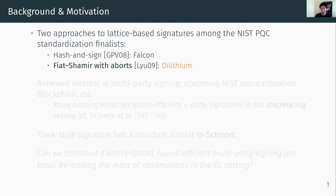If you look at the lattice-based candidates, there are essentially two different approaches to achieve lattice-based signatures. The first one is called hash-and-sign — Falcon is a concrete instantiation. The other one, which we are going to look at, is Fiat-Shamir with abort paradigm, and Dilithium is a concrete instantiation among the finalists.